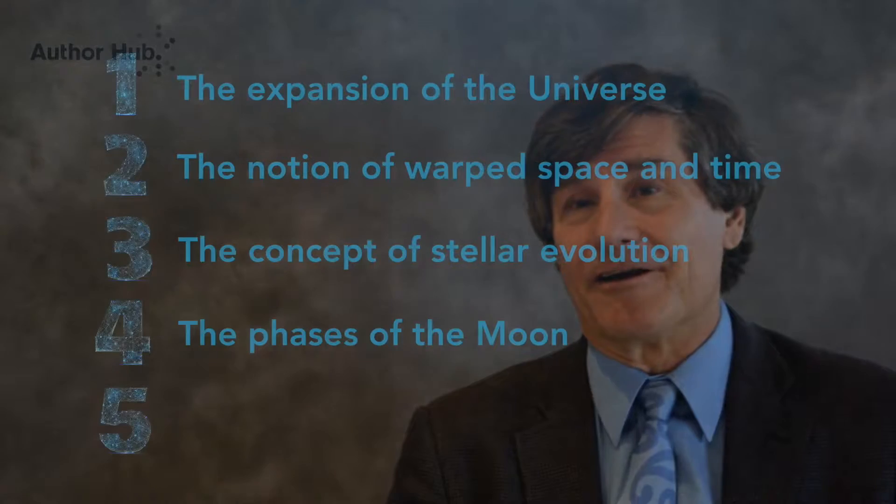The tides on Earth's surface are a concept that many people don't understand, and students in particular might have misconceptions about. They may have heard that the Moon pulls the water on the near side of Earth toward the Moon, but in fact there's a bulge on the diametrically opposite side of Earth as well. There are two high tides per day and two low tides per day. Students who don't live in coastal regions might not even be familiar with these changing tides, and we discuss them in some detail.